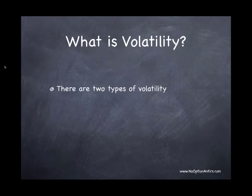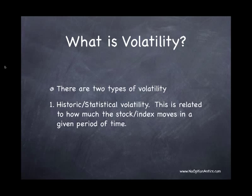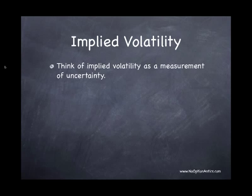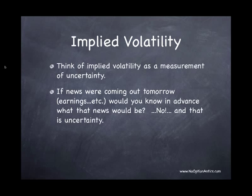The other part is volatility. There are two different types: one is historic or statistical volatility, which relates to how much the stock itself can move in a given period of time. When working with options, though, we're talking about something called implied volatility. Implied volatility is a measurement of uncertainty. For example, if there were a news article coming out about a particular stock — whether an FDA approval, earnings, or some other news event — that announcement doesn't tell you whether the news is good or bad. It only tells you that there's news coming out. That is uncertainty.